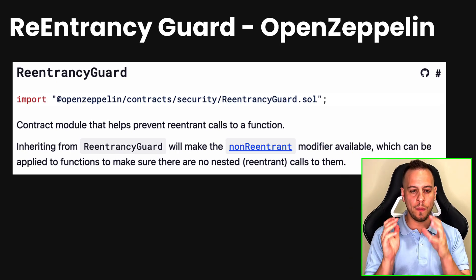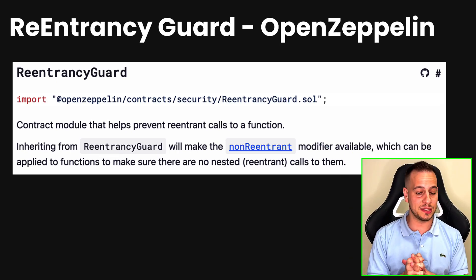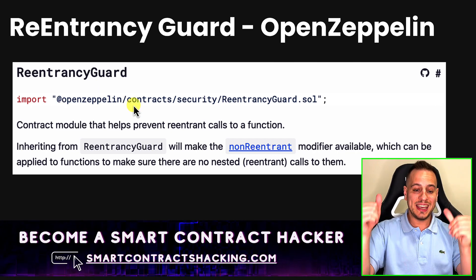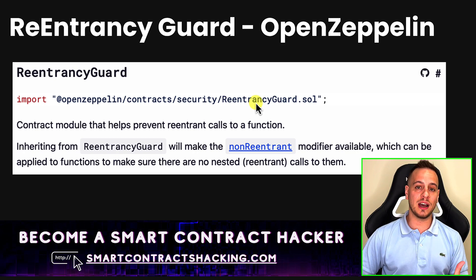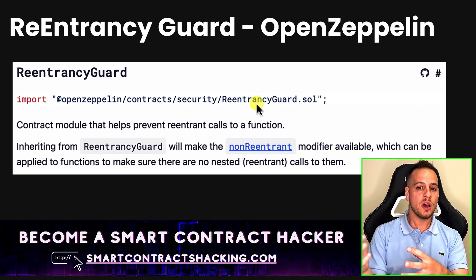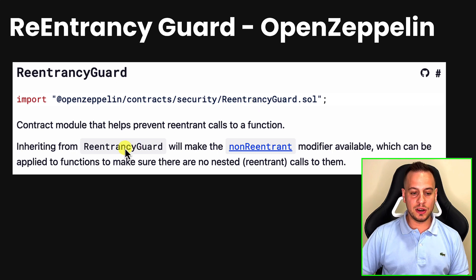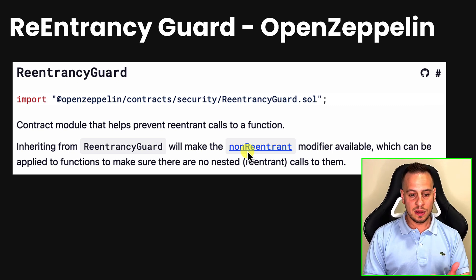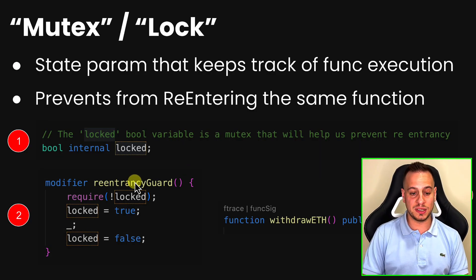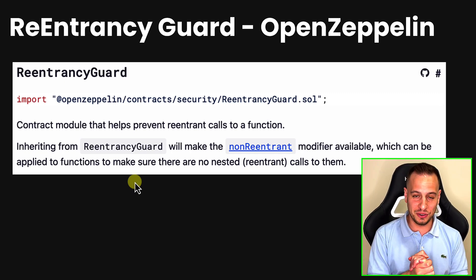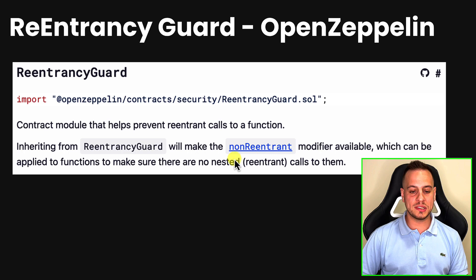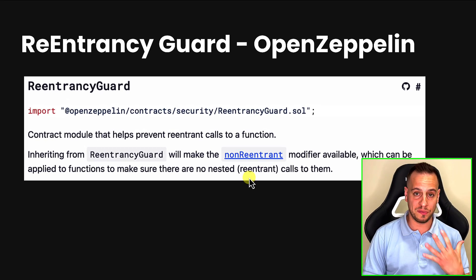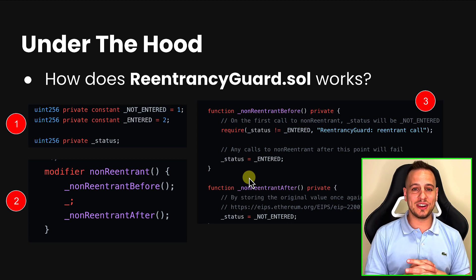Instead of implementing the mutex and modifier yourself, another alternative is using the OpenZeppelin ReentrancyGuard library. You can simply import this library into your smart contract, then inherit from the ReentrancyGuard contract. Once you inherit it, you can use the `nonReentrant` modifier on your Solidity functions. OpenZeppelin has already created this modifier for you — just inherit the contract and right away use `nonReentrant` to protect your functions.